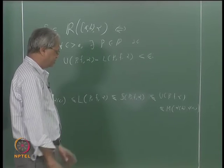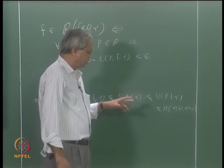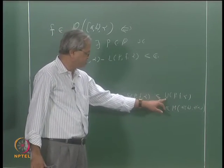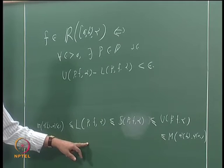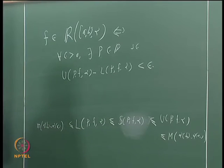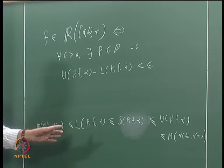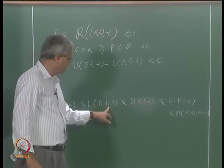We also know that whenever a function is integrable the upper and lower integrals coincide. The upper integral is the infimum of the upper sums, so it is always less than or equal to any upper sum, and the lower integral is the supremum of the lower sums, so it is bigger than or equal to any lower sum. Both the lower and upper integrals lie between any lower sum and upper sum, and when the function is integrable their common value is the integral.